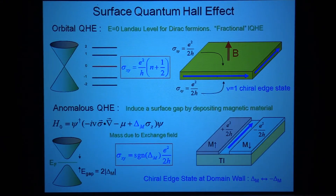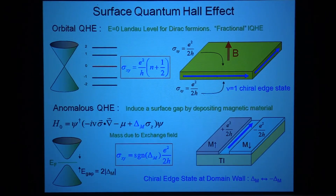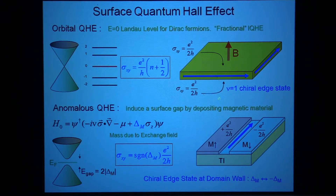Follow-up: But the Laughlin argument was for a two-dimensional system. The key point is that the surface can't have an edge — there's a theorem that says the boundary of a boundary is nothing. So all you can do is connect the top surface to the bottom surface, and you can have a boundary between them, but that doubles it.